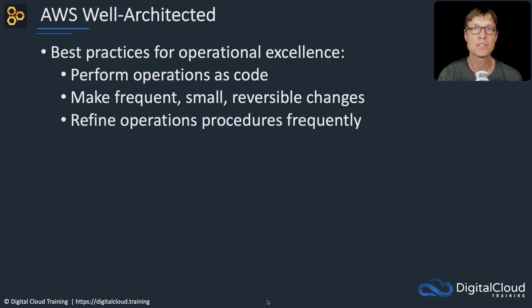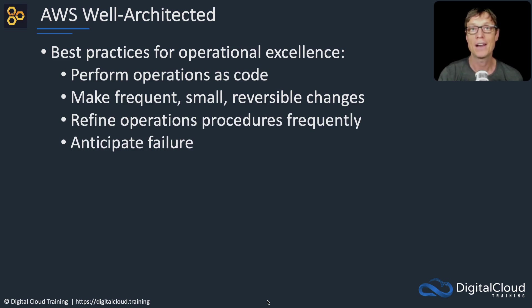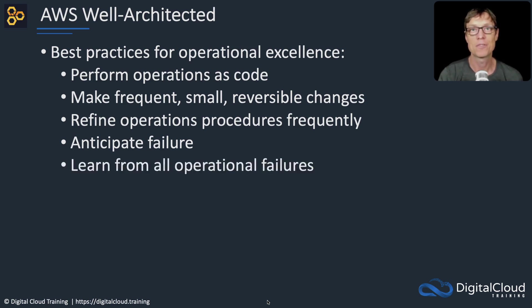Refine operations procedures frequently — constantly reevaluate how you're doing things. Is there a better way? And anticipate failure — a big one that comes up a lot. Make sure you always anticipate what could go wrong; that's how you can prevent it from happening. Also make sure that you're able to recover from failure when it does happen. Learn from all operational failures — update your processes, work out why it happened and what you can do next time.